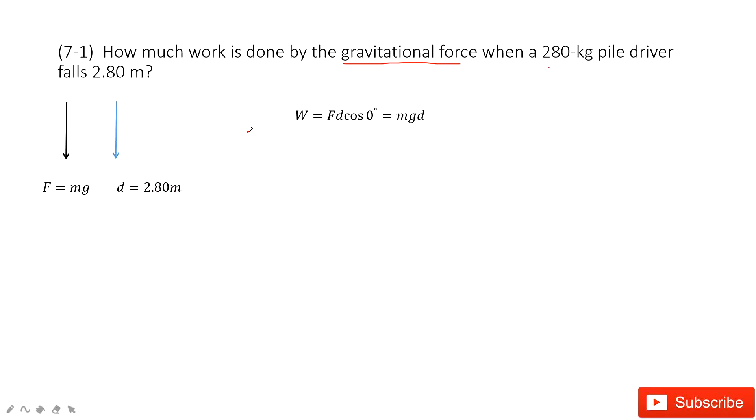We need to find the angle between the force and the distance it moves. As we know, because the object falls down, the force is the same as the gravity. So it is pointing down.